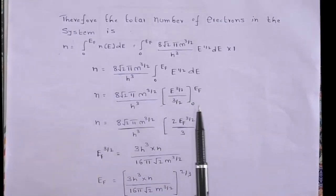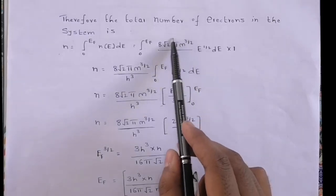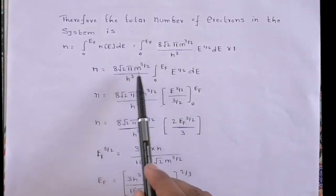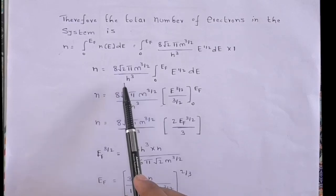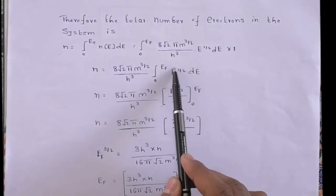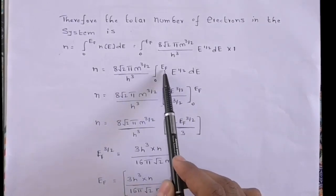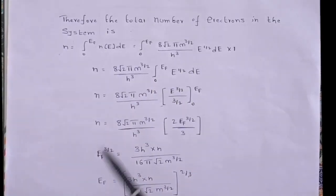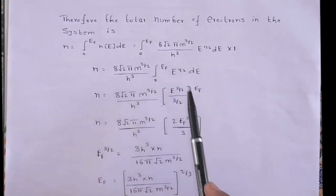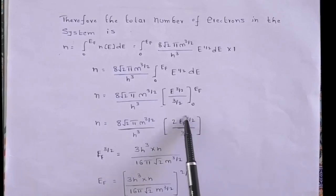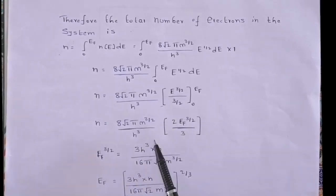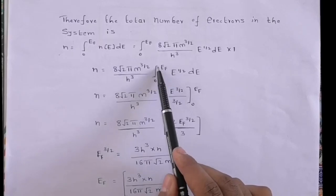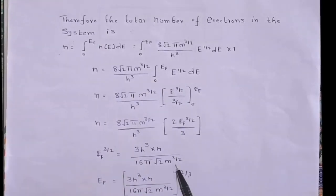We take out the common terms — 8√2 π m^(3/2) / h³ — and integrate only E^(1/2) between the limits 0 and E_F with respect to dE. Integrating this gives (2/3) E_F^(3/2), where E is replaced by E_F because the upper limit is E_F, which is the Fermi energy.